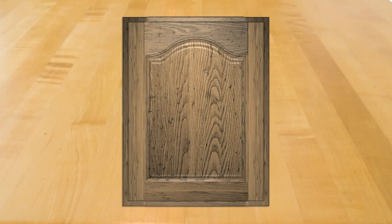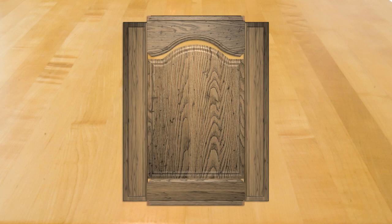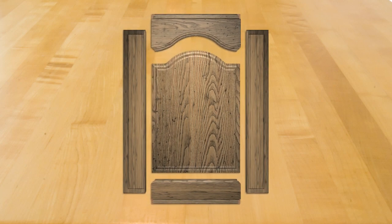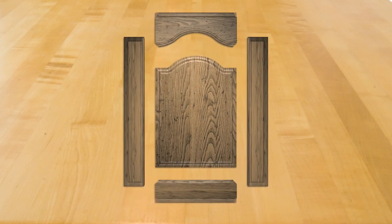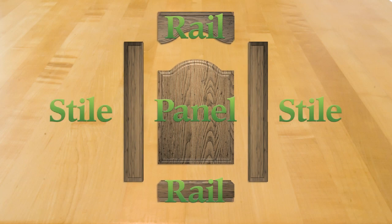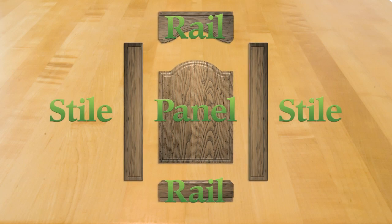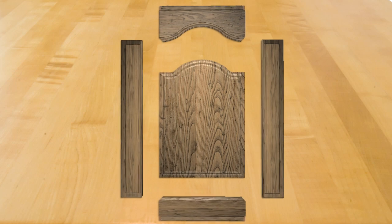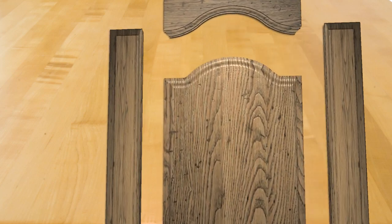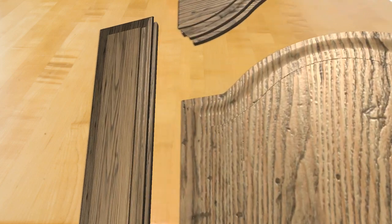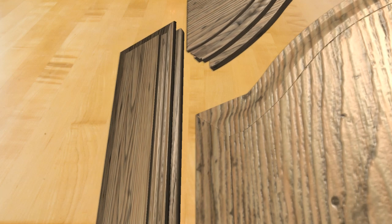A frame and panel door is constructed of five parts: two stiles, two rails, and a panel. Stiles are the vertical parts that run top to bottom, and rails are the horizontal parts that fit between the stiles. The panel fits in a groove in the stiles and rails, filling the area between them. The panel can be solid wood, plywood, glass, or practically anything you want.